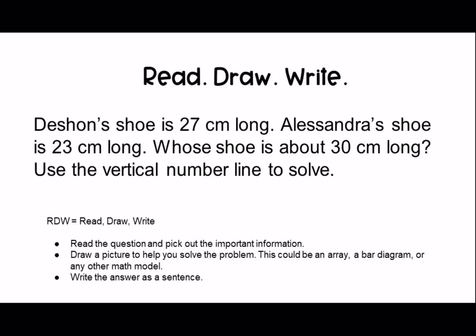Let's try our redraw-write question together. Deshawn's shoe is 27 centimeters long. Alessandra's shoe is 23 centimeters long. Whose shoe is about 30 centimeters long? Use the vertical number line to solve. The important information is that Deshawn's shoe is 27 centimeters and Alessandra's shoe is 23 centimeters. We need to know which shoe is closest to 30 centimeters long, and we should use a vertical number line to solve.